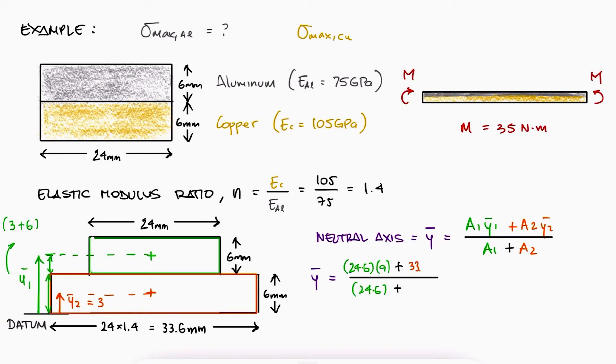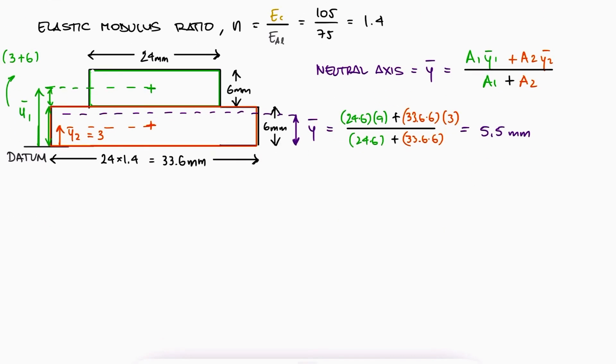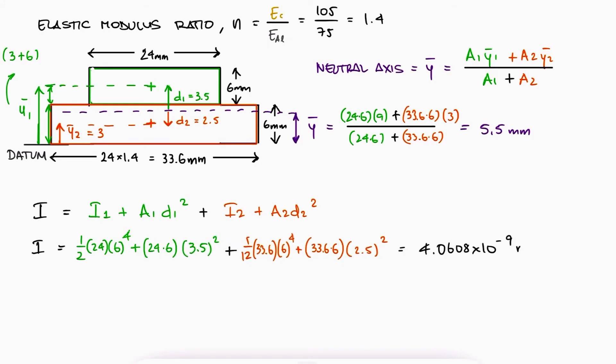With the location of the neutral axis from our datum, we now know the distance from the neutral axis to the top and to the bottom. With it, we can also use the parallel axis theorem to calculate the second moment of area. The distance from the neutral axis to the centroid of area 1 would be 3.5 millimeters and the distance from the neutral axis to the centroid of figure 2 would be 2.5 millimeters. With the second moment of area for rectangles and their areas, we find the second moment of area for the transformed section.